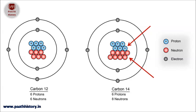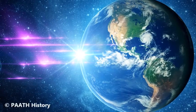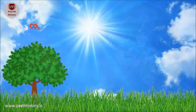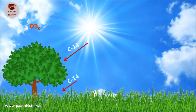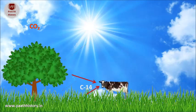Carbon-14 is formed due to the influence of cosmic radiation on nitrogen in the atmosphere. Plants absorb C-14 from the atmosphere through their intake of carbon dioxide during the process of photosynthesis. C-14 then passes into animals as they feed off plants or other animals.